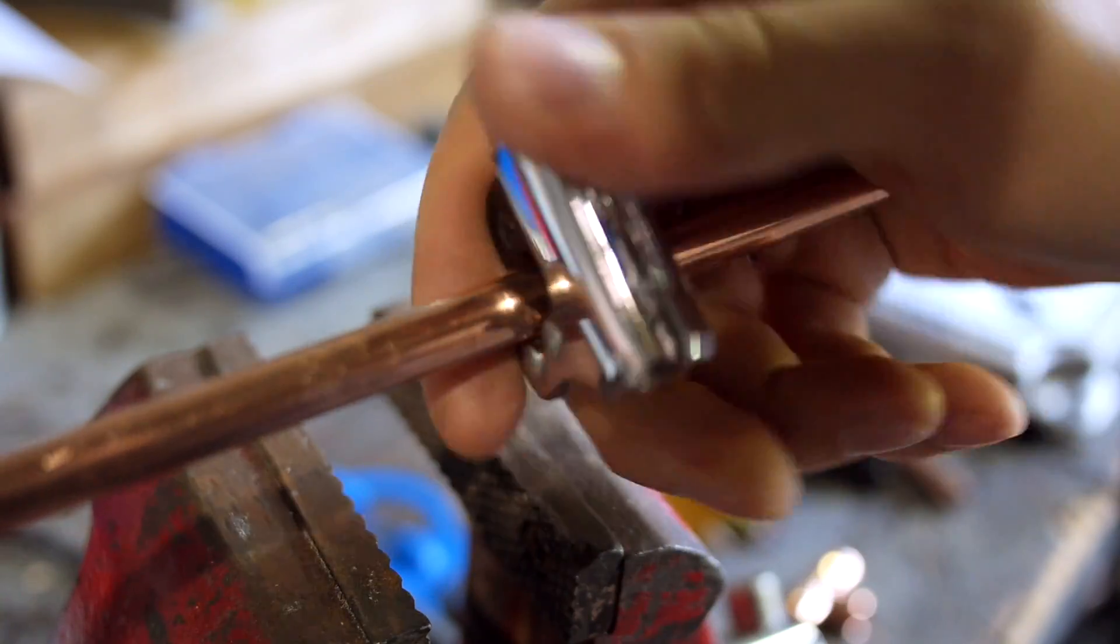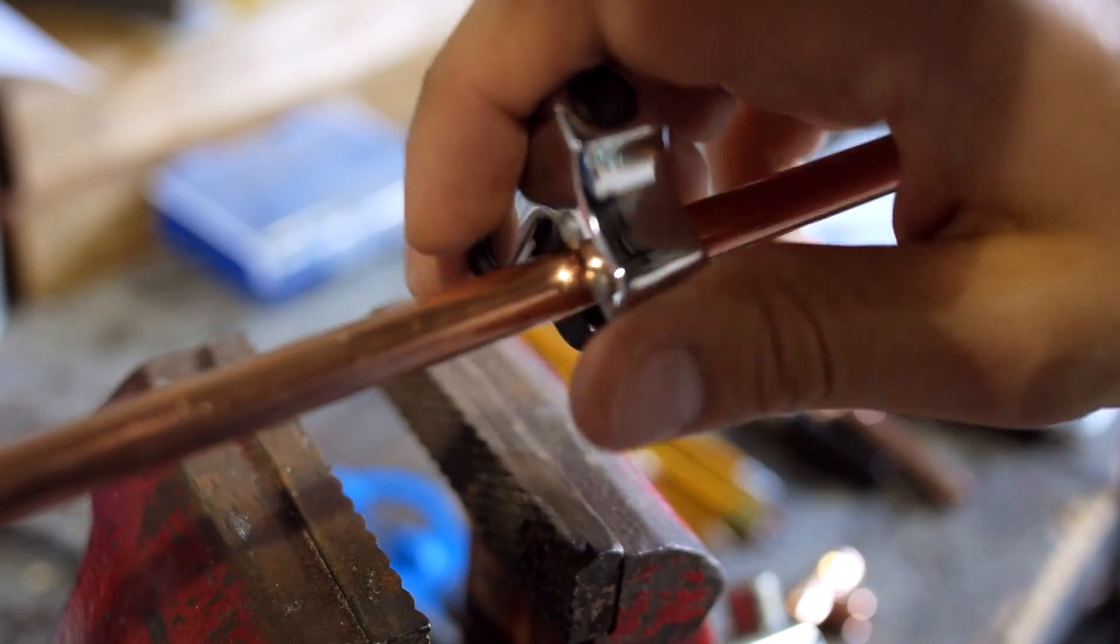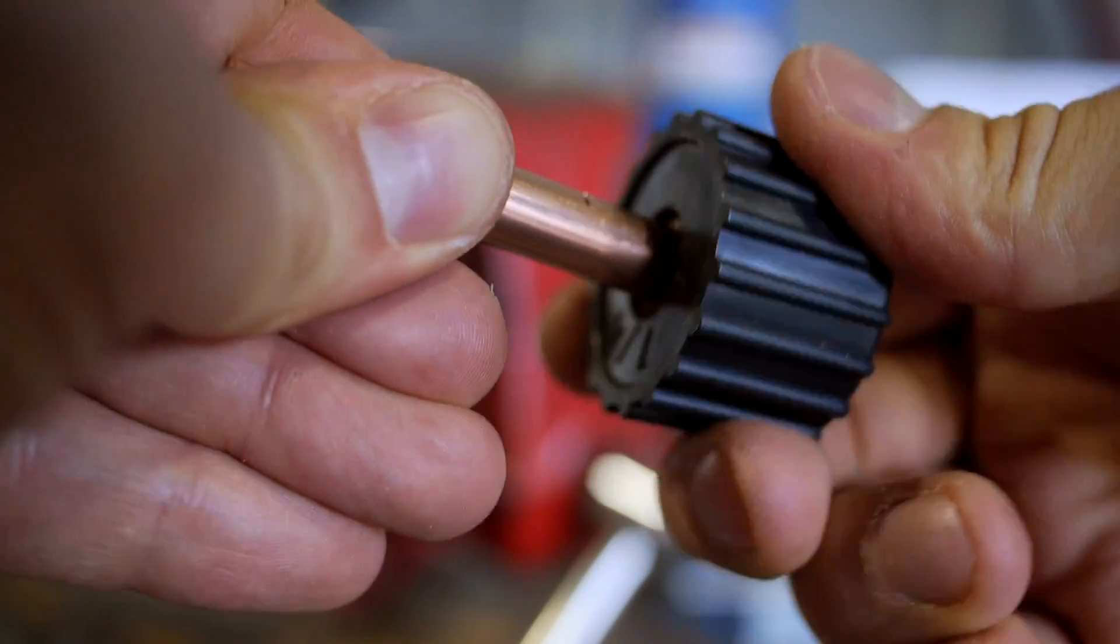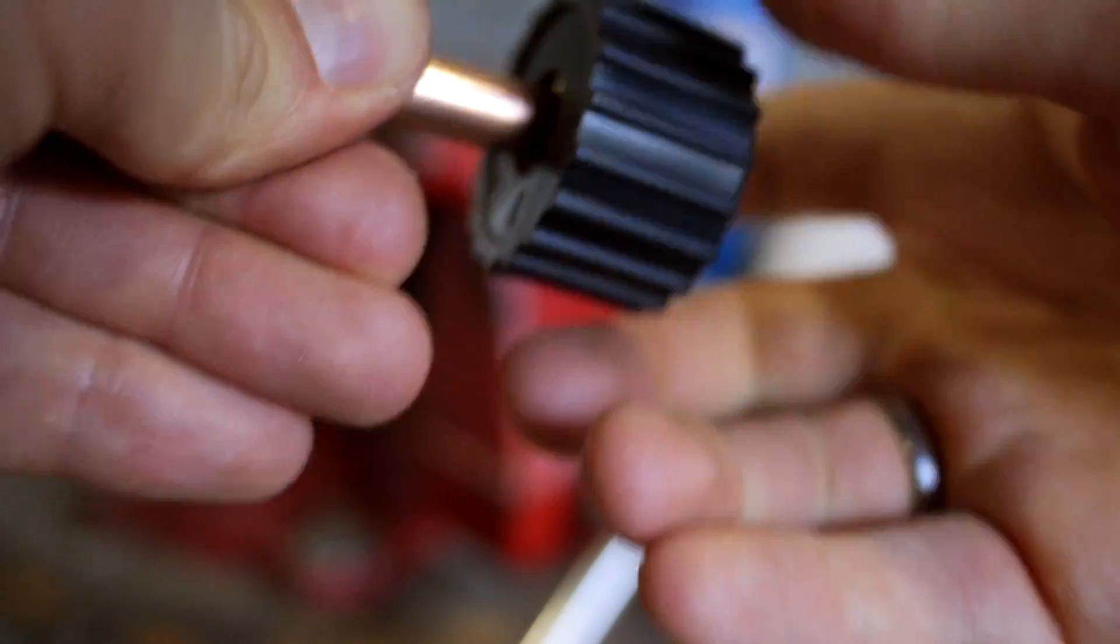One quick note: be careful when you're clamping down on the cutter. You don't want to accidentally crush the pipe, as the copper is very soft. Once you cut off the pipe, you have to clean up the ends to prepare for the solder.